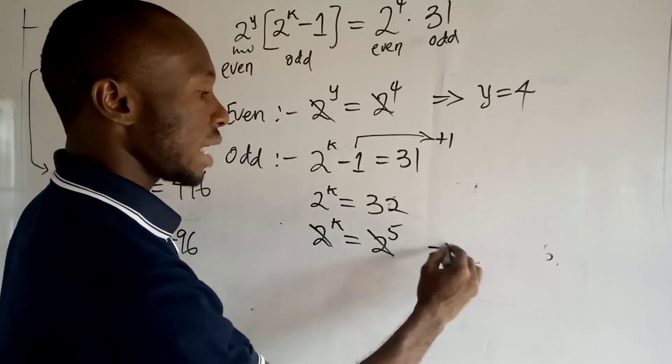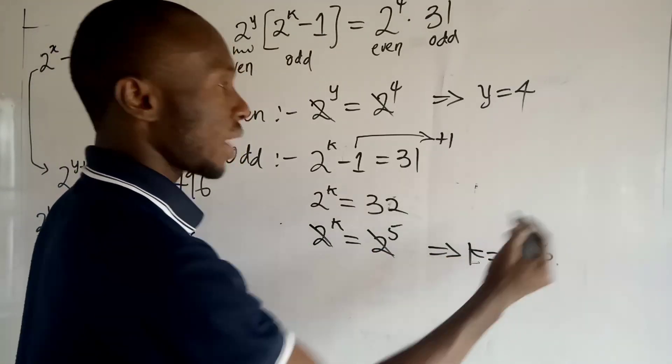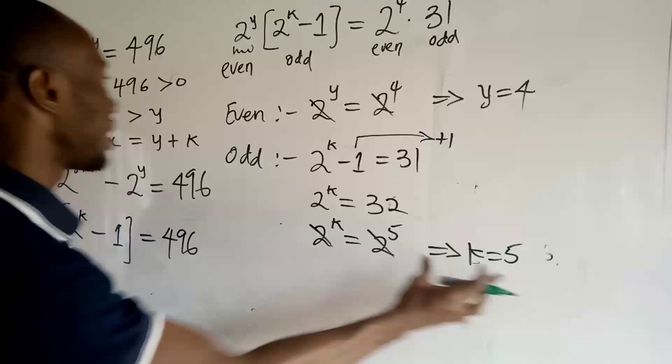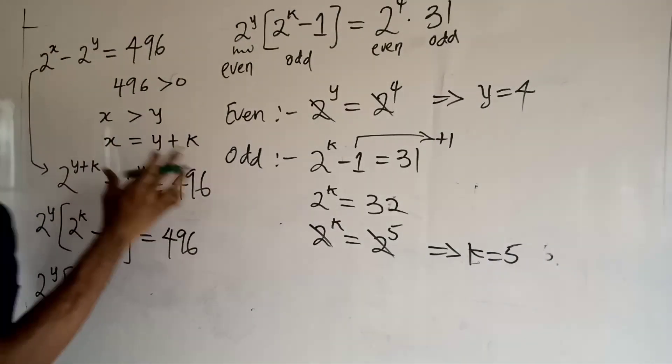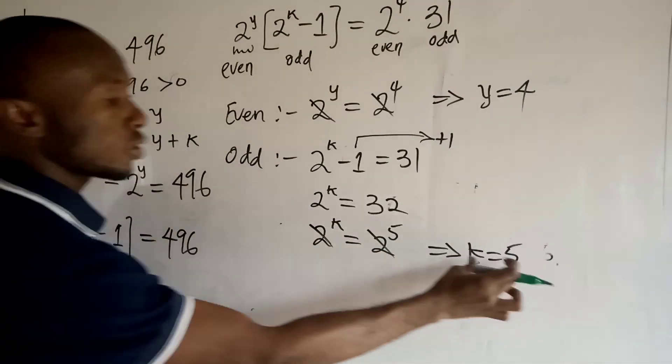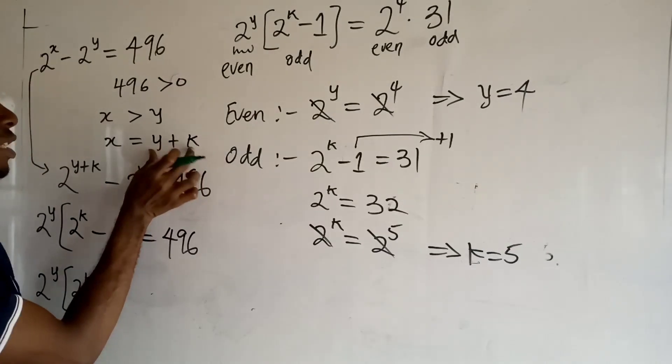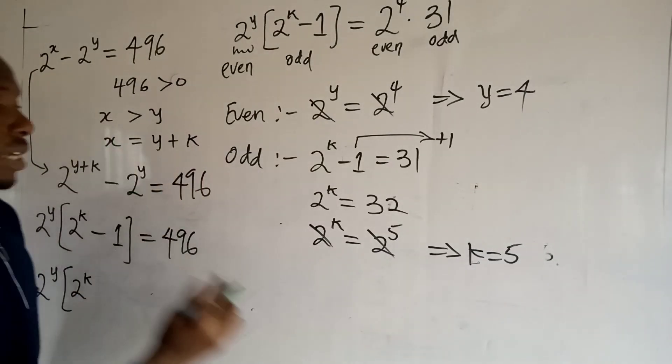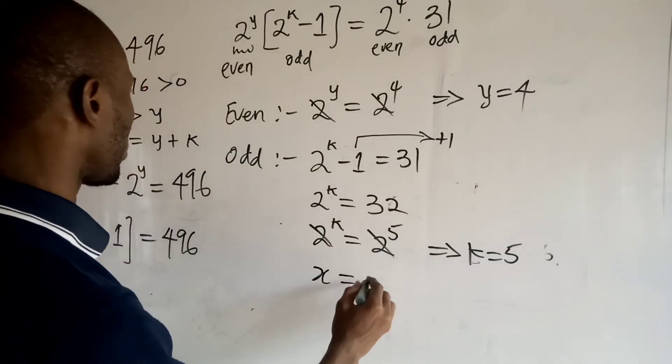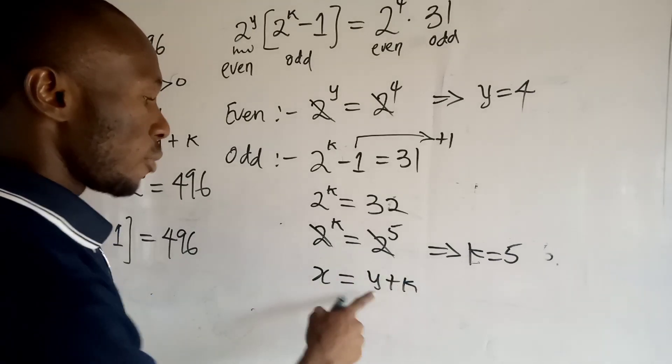Now remember we made a statement for x. We want to obtain the value of x, so I'll plug in the value of k and the value of y into this equation to get the value of x. So x is equal to y plus k.